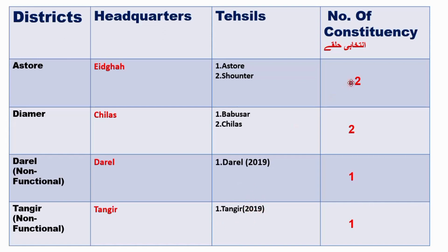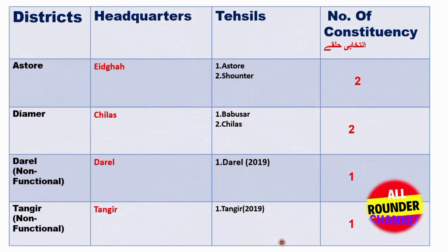Number of constituencies in Diyamar Division districts: in Astor there are two constituencies, in Diyamar there are two, in Daryl there is only one, and in Tangir there is only one constituency.